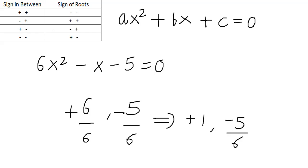So all you got to do is remember this table, and after that you just have to find the product, then the sum, write down that value, then divide by the coefficient of x squared, and then depending on the sign in between, you find the sign of the roots. And that's it — as simple as that. Once you remember this table, finding the roots of a quadratic equation will be a matter of seconds.